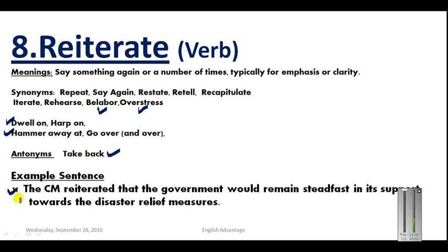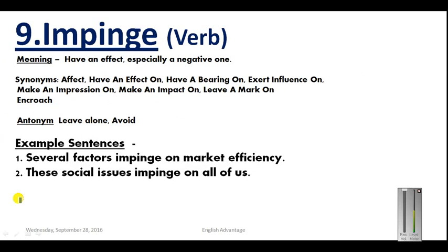Example sentence for reiterate: 'The CM reiterated that the government would remain steadfast in its support toward the disaster relief measures.' The ninth word is 'impinge.' Impinge means to influence something — especially in a negative way — to have an effect or bearing on something, or to exert influence on something. It has another meaning: encroachment or infringement. Antonyms are: avoid and leave alone.